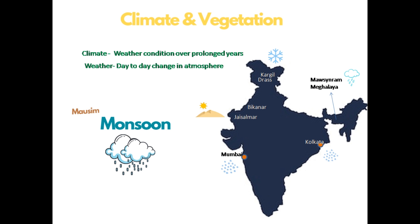We have studied India's physical features in our last lesson. Siachen, Kargil, and Jammu and Kashmir are too cold. In contrast, Bikaner and Jaisalmer — deserts of Rajasthan — are extremely hot. Indian coastal plains like Mumbai, Kolkata and Chennai have a moderate climate, neither too cold nor too hot; they have a humid temperature.